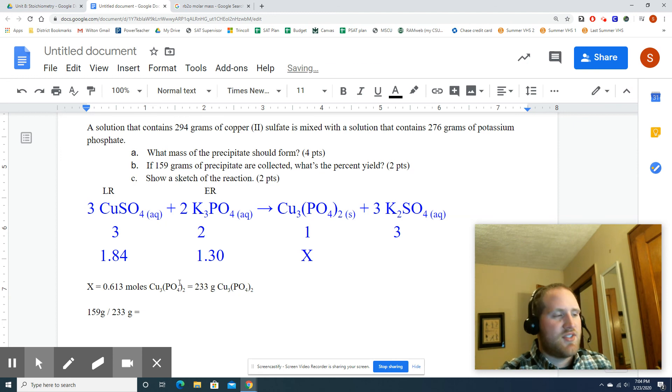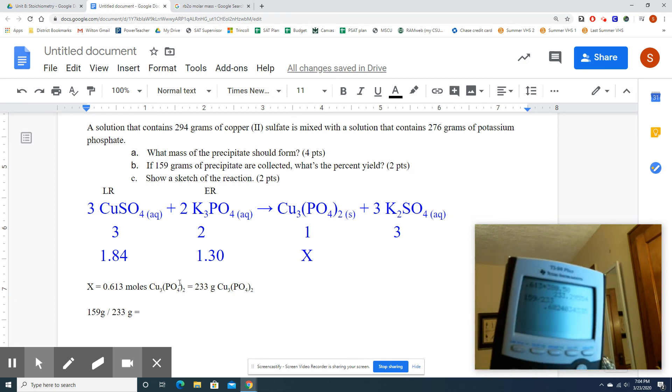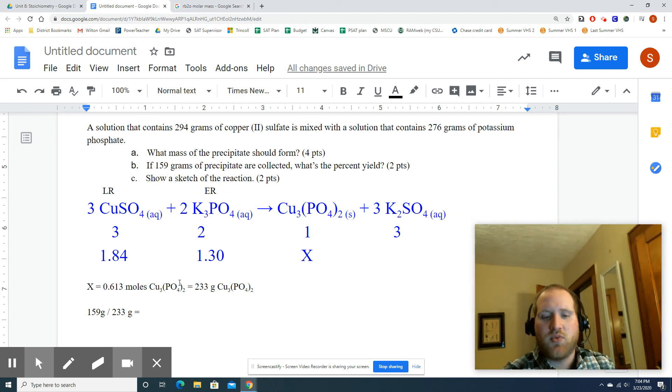All right, so you look at those numbers, it looks like about 60% or so. So 159 over 233 gives me this, and you're going to multiply that by 100. So sweep it twice, 0.682 becomes 68.2. And that is my percent yield.